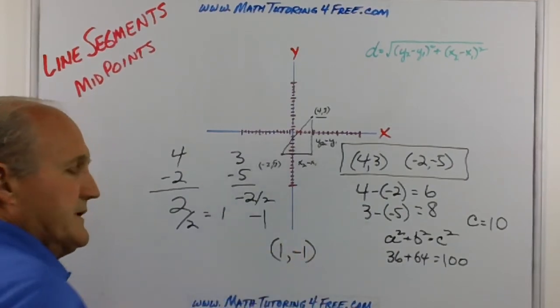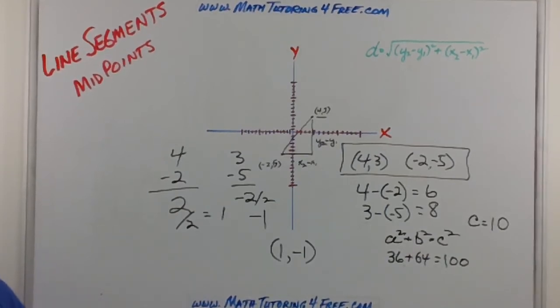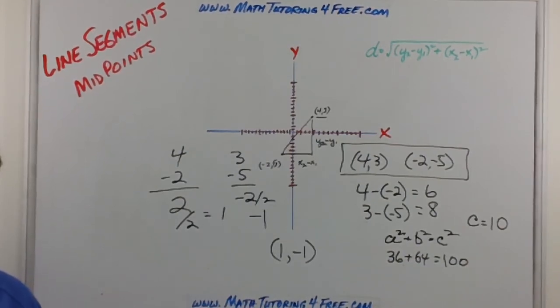Fairly easy, just remember midpoint is average. I just take the average of the x, the average of the y, and I got it. Next I want to talk a little bit about parallel lines cut by a transversal.